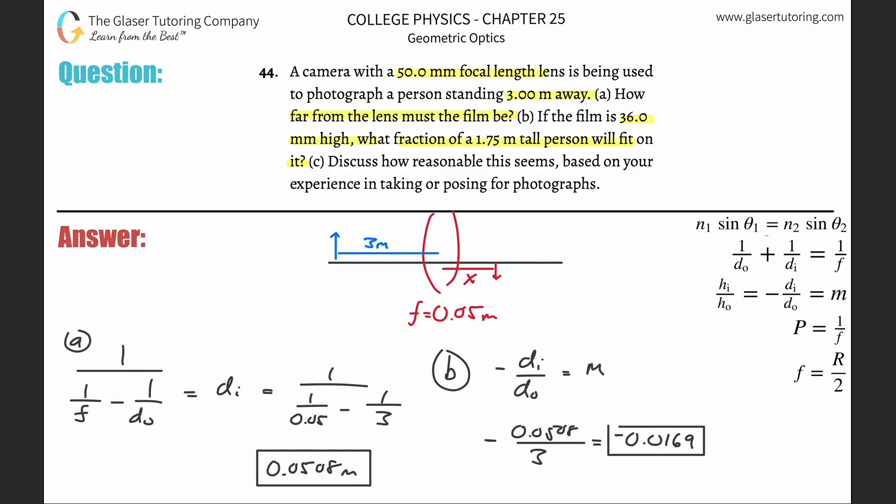So what we can do now is we can take the height of the person, we can take the 1.75 meters, and then what we can do is we can multiply it now by this magnification.